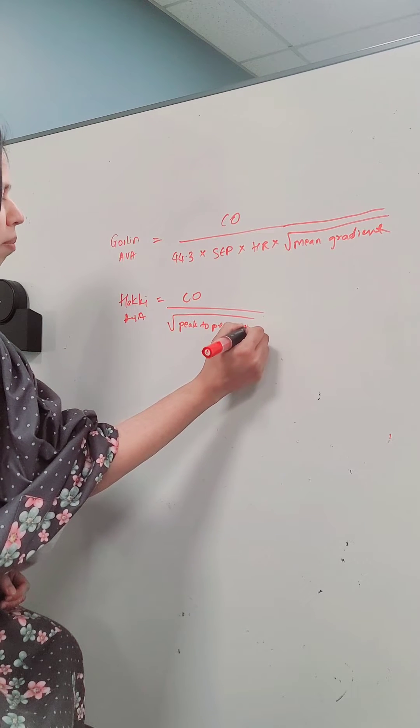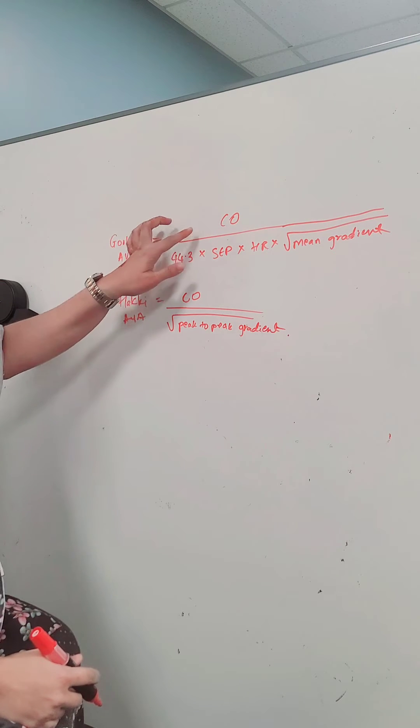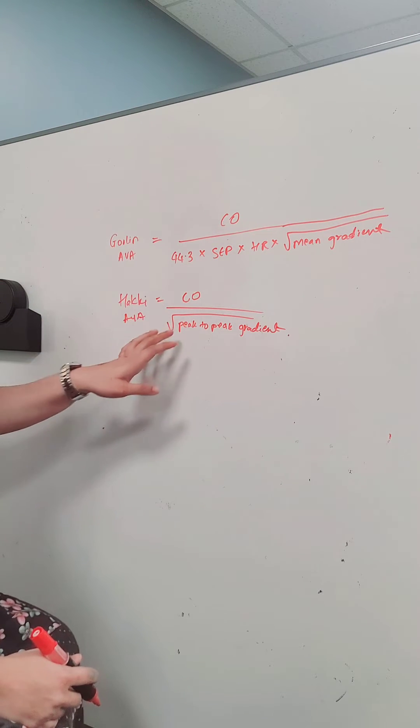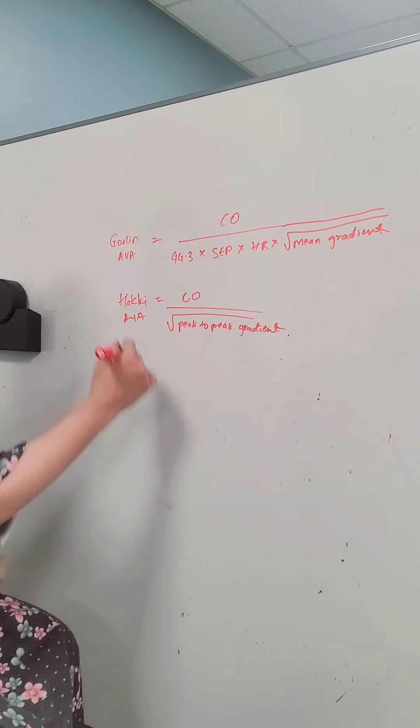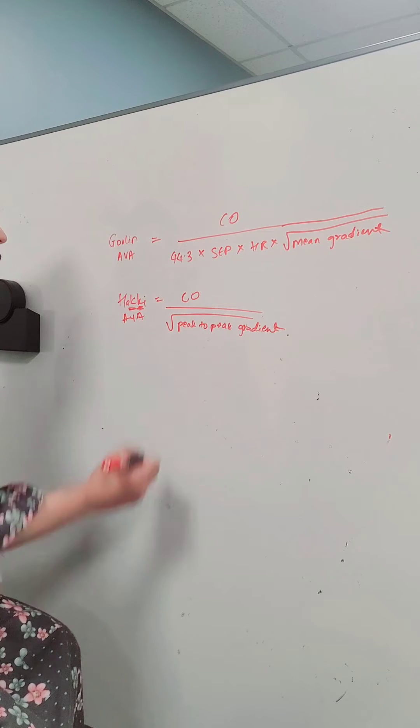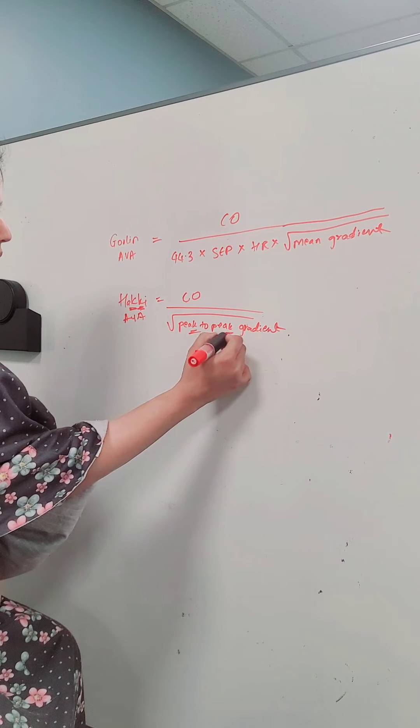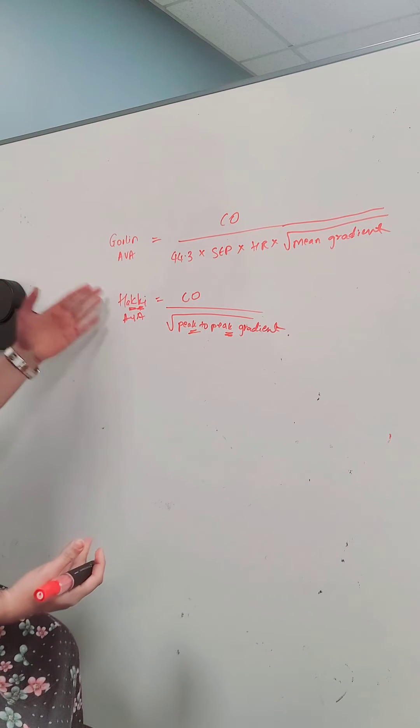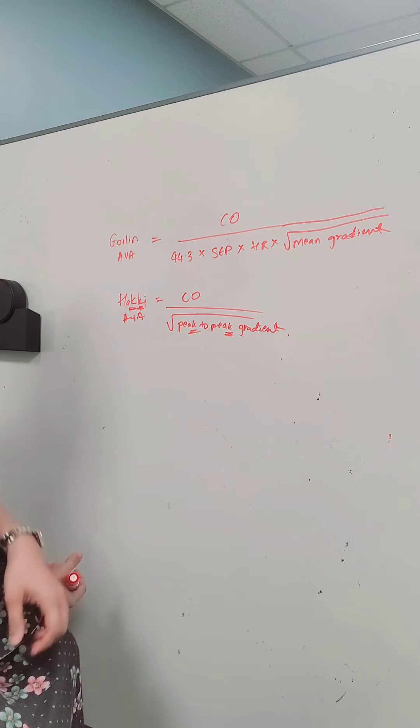So the way I remember this is that Haki, well so both formulas have the cardiac output and it's divided by the square root of a gradient. Now which gradient you have to remember? So the Haki equation has two k's in it which helps me remember that it's the peak-to-peak gradient and peak also has a k in it. So Haki is cardiac output divided by the peak-to-peak gradient which we measure in the cath lab.